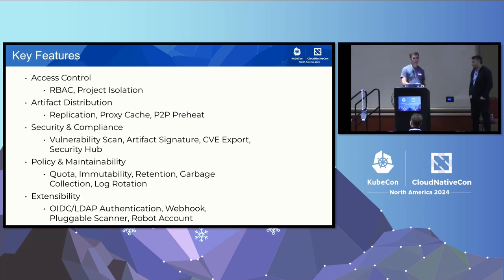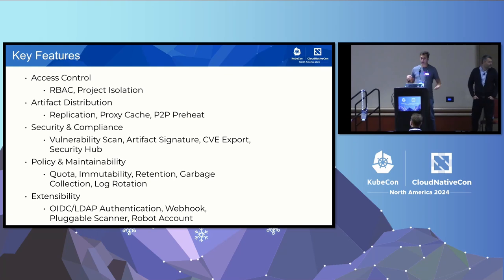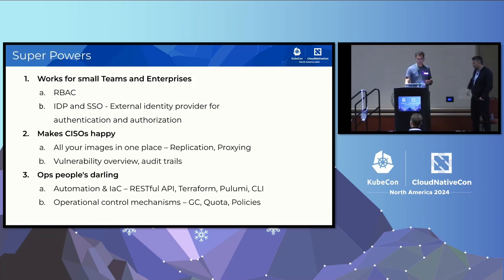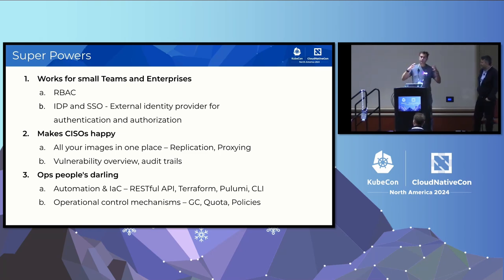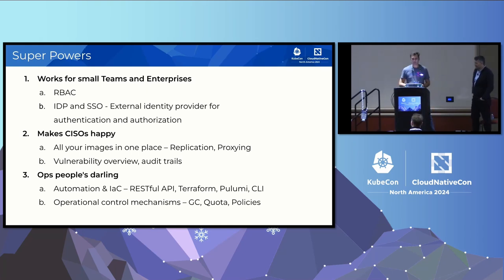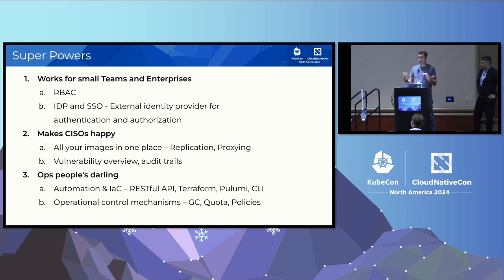The key features of Harbor — we're bundled with features, so I won't go through all of them, but we have RBAC, replication, vulnerability scanning, policy, and extensibility in terms of authentication, for example. What makes Harbor interesting from the use case scenario is the actual RBAC which has evolved from the time of first creation to what we have now. We can integrate Harbor with an IDP and have SSO, so you can use your own backend for authorization.